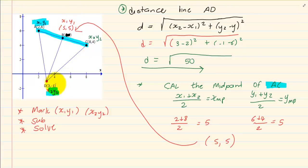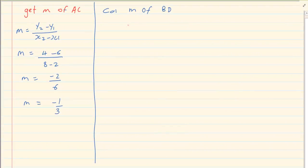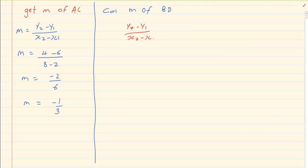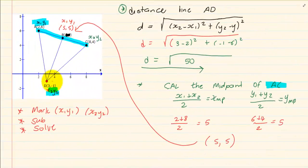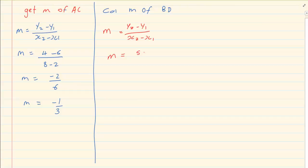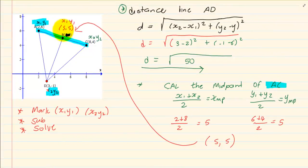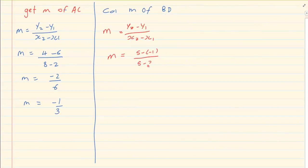So it will be 5 minus minus 1. We know it's y2 minus y1 over x2 minus x1. So we have 5 minus minus 1 over 3. So our m is equal to 6 over 2 which is equal to 3.